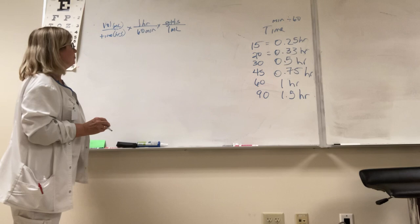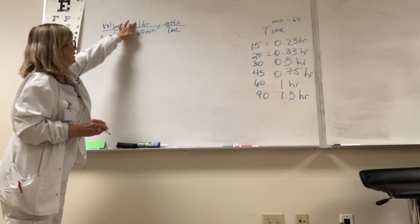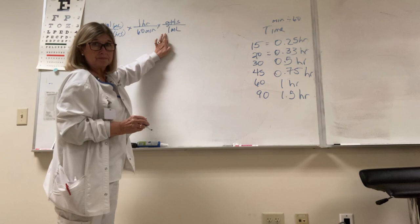Okay, the next most common problem you're going to see: they'll ask you how many drops per minute. The formula starts out the same - volume in milliliters divided by time in hours, then you multiply one hour divided by 60 minutes, and then this is your drops per milliliter.